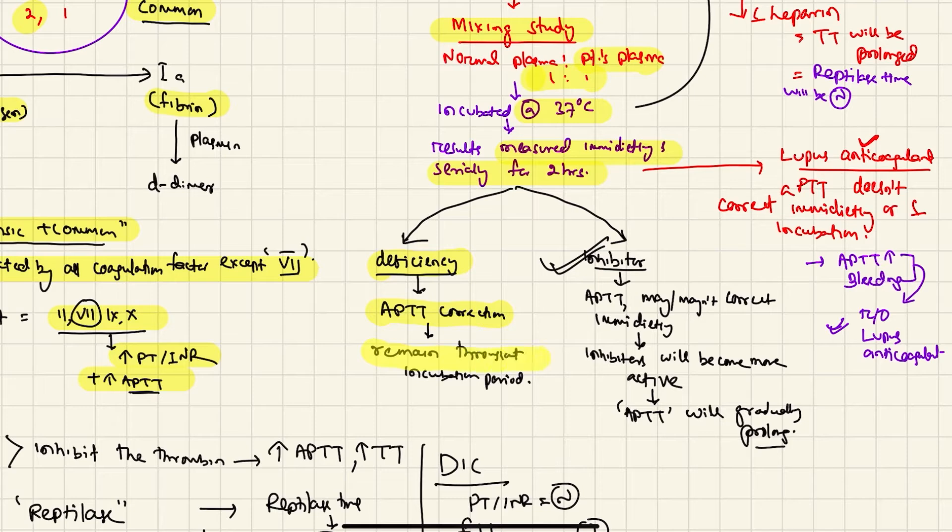If there is deficiency, what will happen is the aPTT will correct and remain corrected throughout the incubation period. But in case of inhibitor, the aPTT may correct immediately or may not correct immediately, but the inhibitors will become more active as the incubation time goes on. The aPTT will gradually prolong, which had happened in our case. So definitely our patient has an inhibitor.